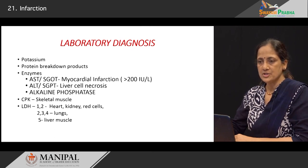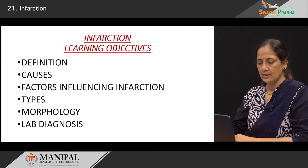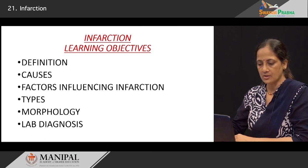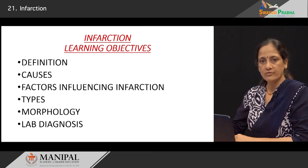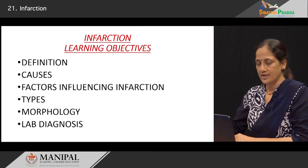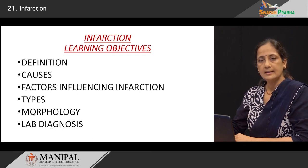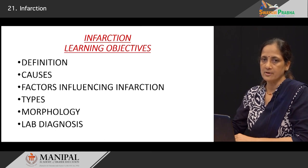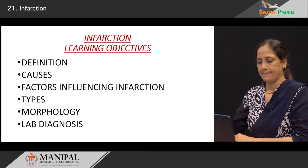We have now gone through the definition of infarction — an area of ischemic necrosis resulting from hypoxia. We have seen the various causes, which we divided into arterial, venous, and microcirculation causes. We saw the factors of the normal circulation which can influence the development of infarction. We classified the infarcts under various subtypes based on color, location, and so on. The morphology of infarctions are usually wedge-shaped lesions with the apex pointing towards the occluded vessel. The lab diagnosis depends on a number of molecules released from the necrosed or infarcted cells.